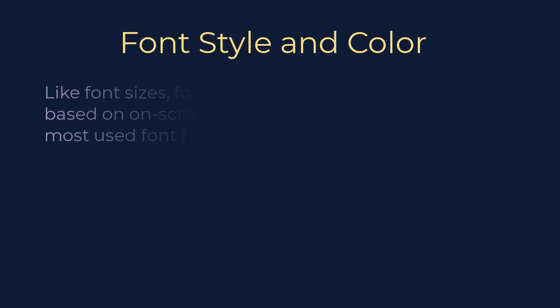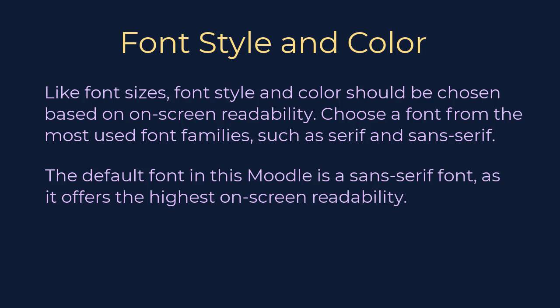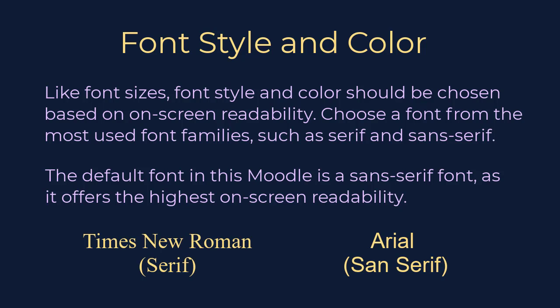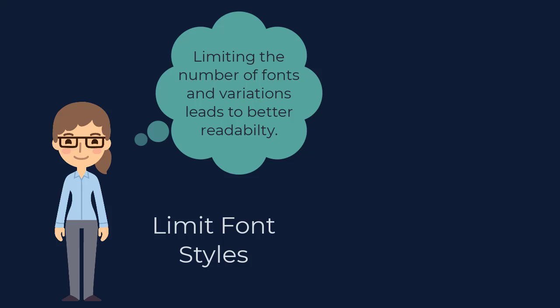Font Style and Color. Similar to font size, font style and color should be chosen based on on-screen readability. When selecting a font for readability, choose a font from the most commonly used font families, like the serif and sans-serif font families. The default font in Moodle is a sans-serif font, as it offers the highest on-screen readability. It's recommended to use Times New Roman or Arial fonts, as they are common to nearly all digital devices and therefore ensure the greatest consistency in appearance. It is best practice to limit the variation of font styles used within a document or course, as limiting the number of fonts and variations can lead to better readability and less confusion or distraction for readers.